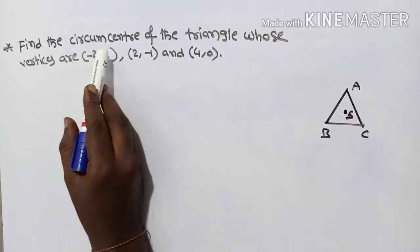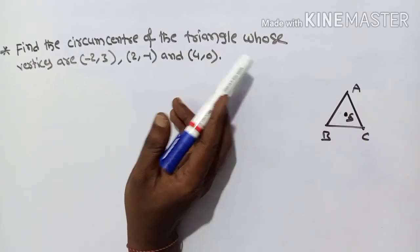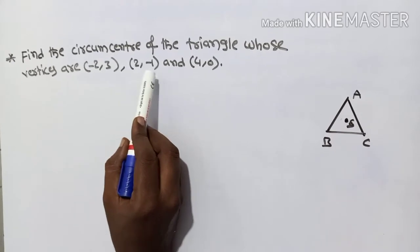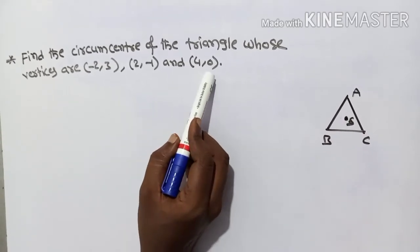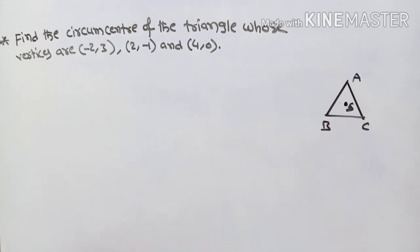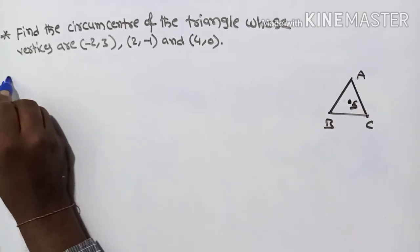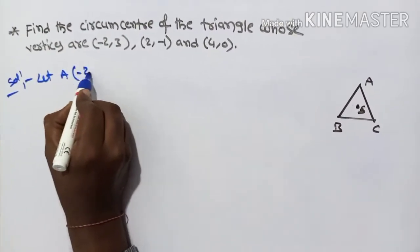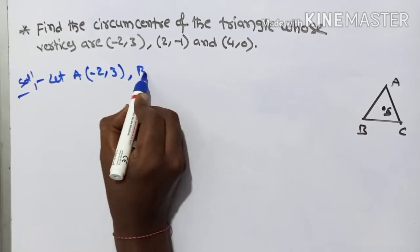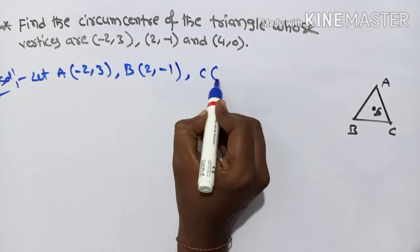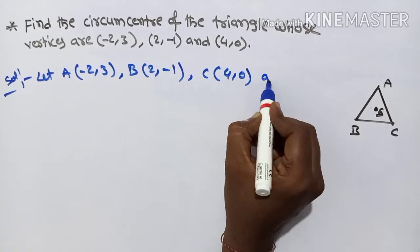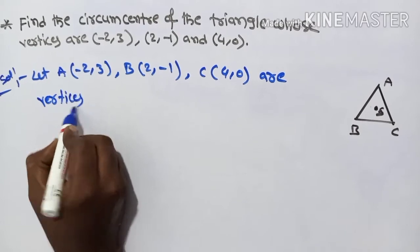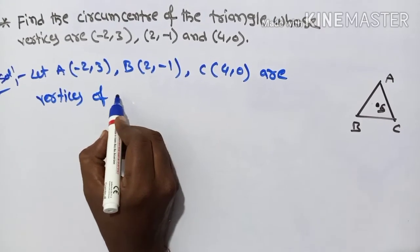Second question: find the circumcenter of the triangle whose vertices are (-2,3), (2,-1) and (4,0). Solution: let A = (-2,3), B = (2,-1), C = (4,0) be vertices of the triangle.